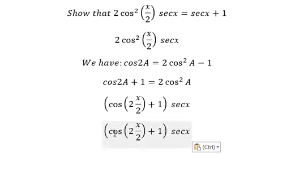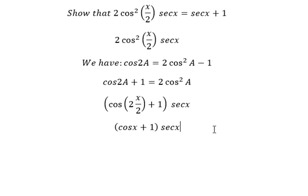This one we have cosine S. Next, cosine S multiplied by secant of S and 1 multiplied by secant of S.